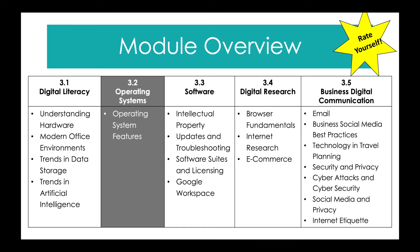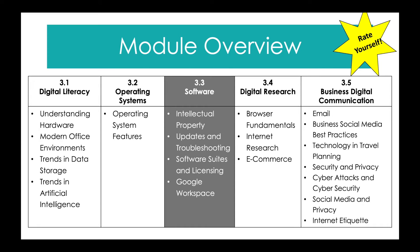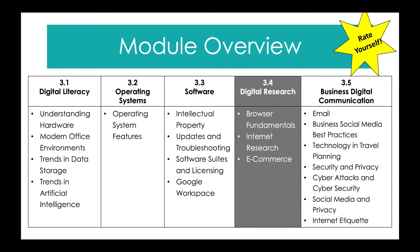Section two is a short one. It's all about operating systems, and it has one subsection talking about operating system features. Section three discusses software, and it includes information on intellectual property, updates and troubleshooting, software suites and licenses, and the Google Workspace. Section 3.4 is all about digital research, with subsections including browser fundamentals, internet research, and e-commerce.